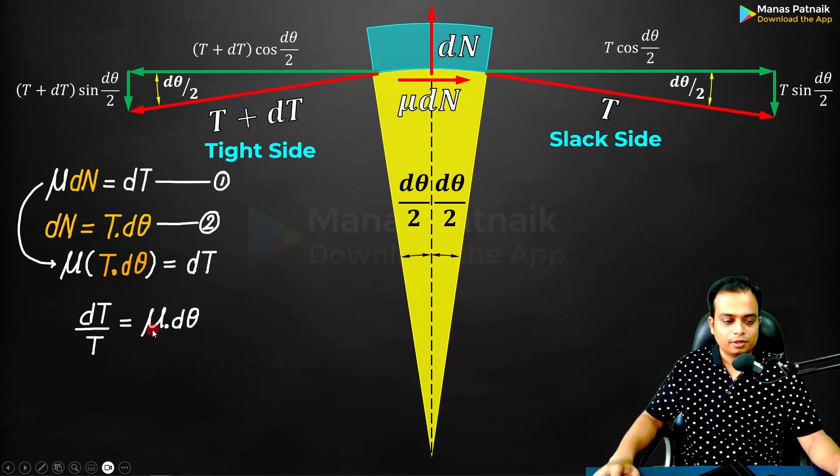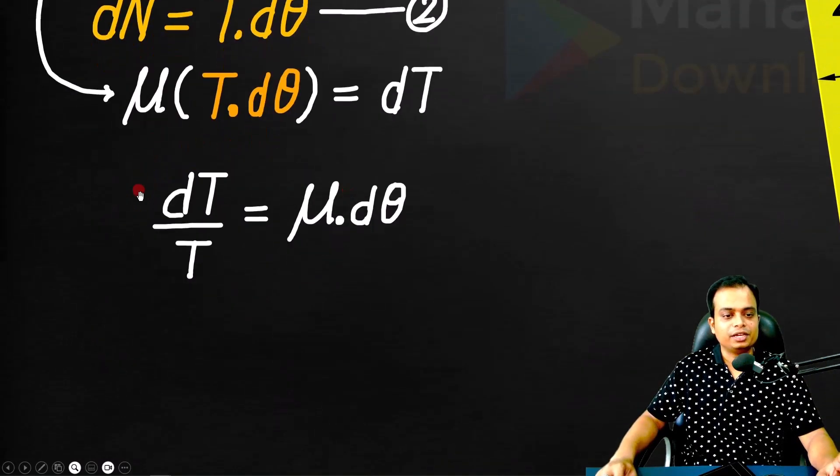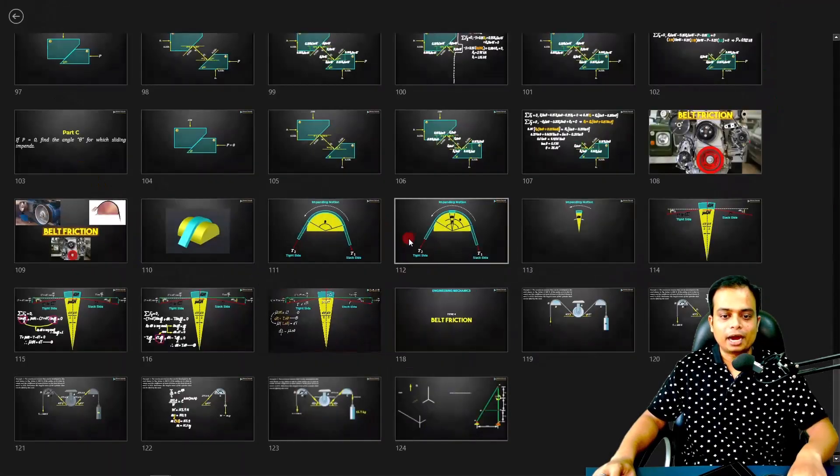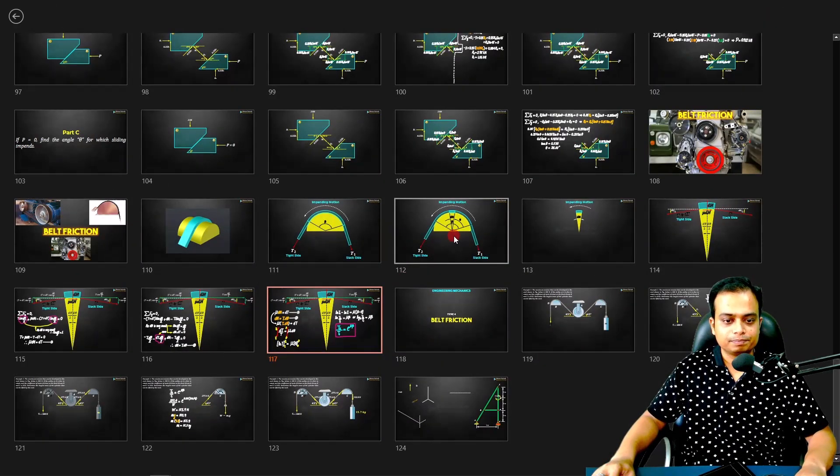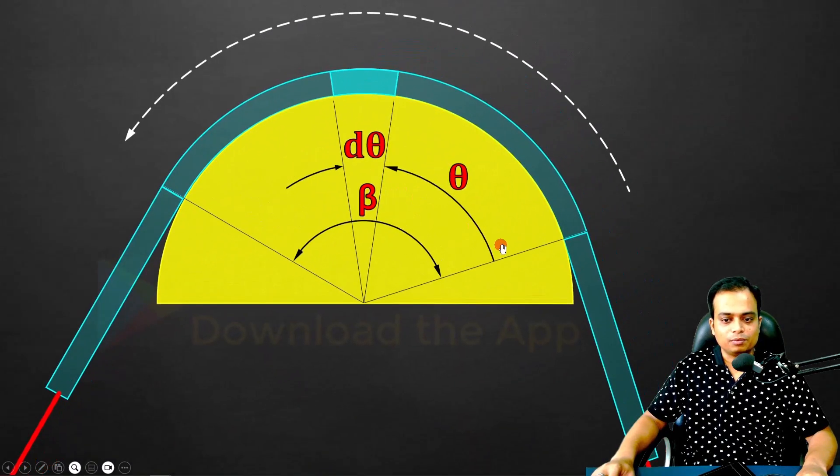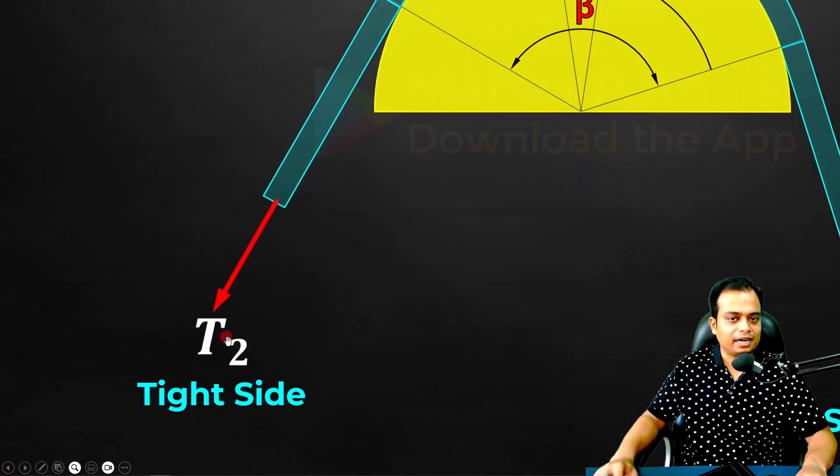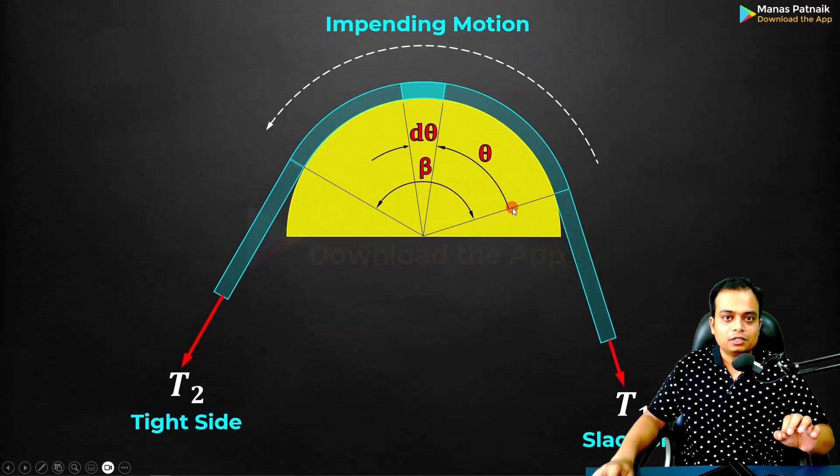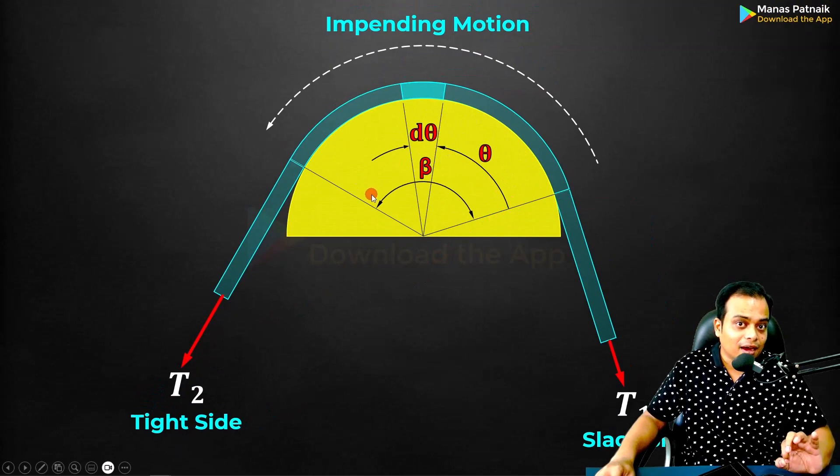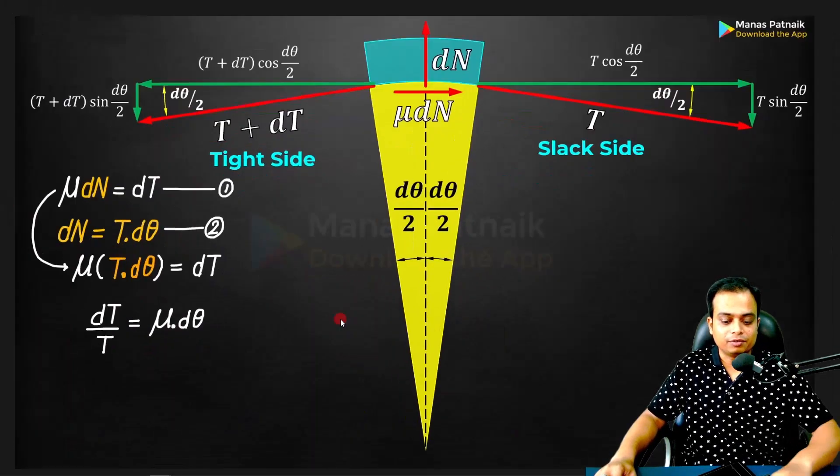This was all about the element. As far as the entire belt is concerned, you need to integrate. When integrating, there are two variables: one in terms of tension, the other in terms of theta. Let me go back to that original figure. Theta is going to vary from 0 to β, whereas the tension is going to start from T1 and end at T2. So for theta 0 to β, for tension T1 to T2, let us apply.